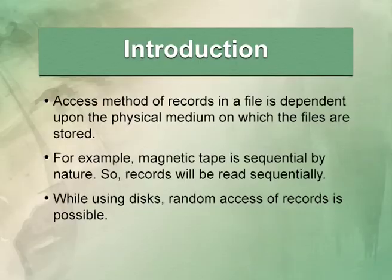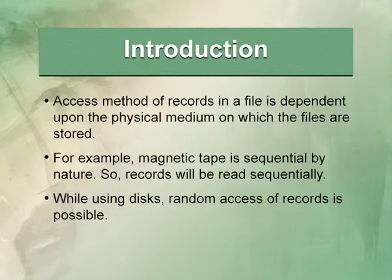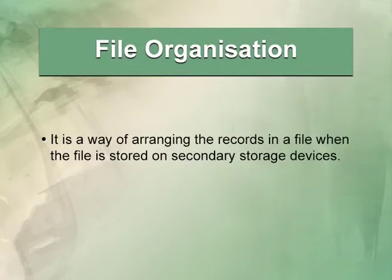The access method of records in a file is dependent upon the physical medium on which files are stored. There are two types of access methods: sequential and random. Sequential access method is best suitable on magnetic tapes and random access of records is best suitable on disks. File organization is a way of arranging the records in a file when the file is stored on the secondary storage device.